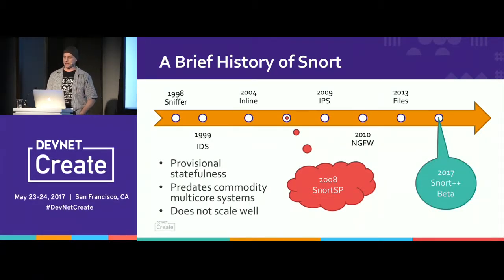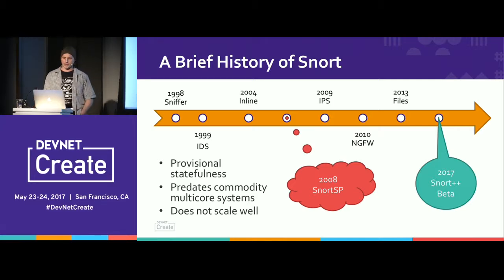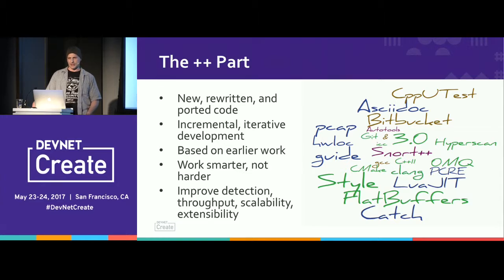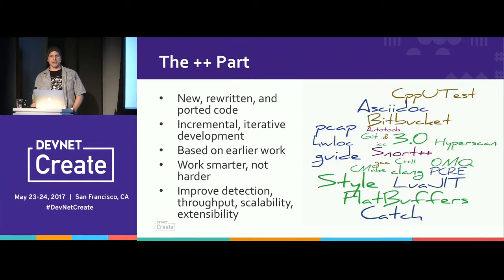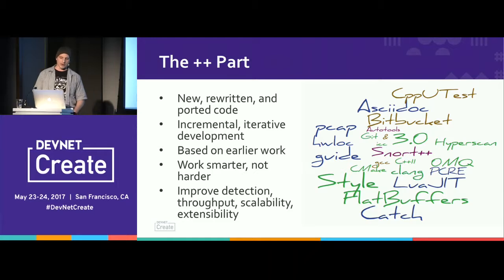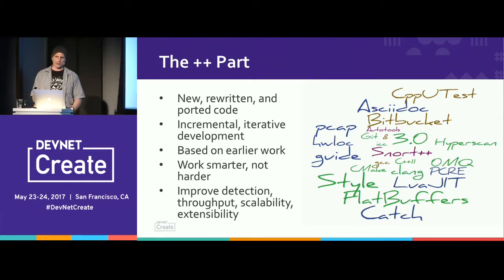Around 2013, I got another opportunity to work on the next generation of Snort — that's when Snort++ actually began. So what is the '++' all about? It represents an increment of the major version from 2.x to 3.0. It means we're using C++, and doing incremental iterative development — a walking skeleton concept, working smarter not harder. The overall goals are to improve both detection and throughput simultaneously, and also improve scalability and extensibility.